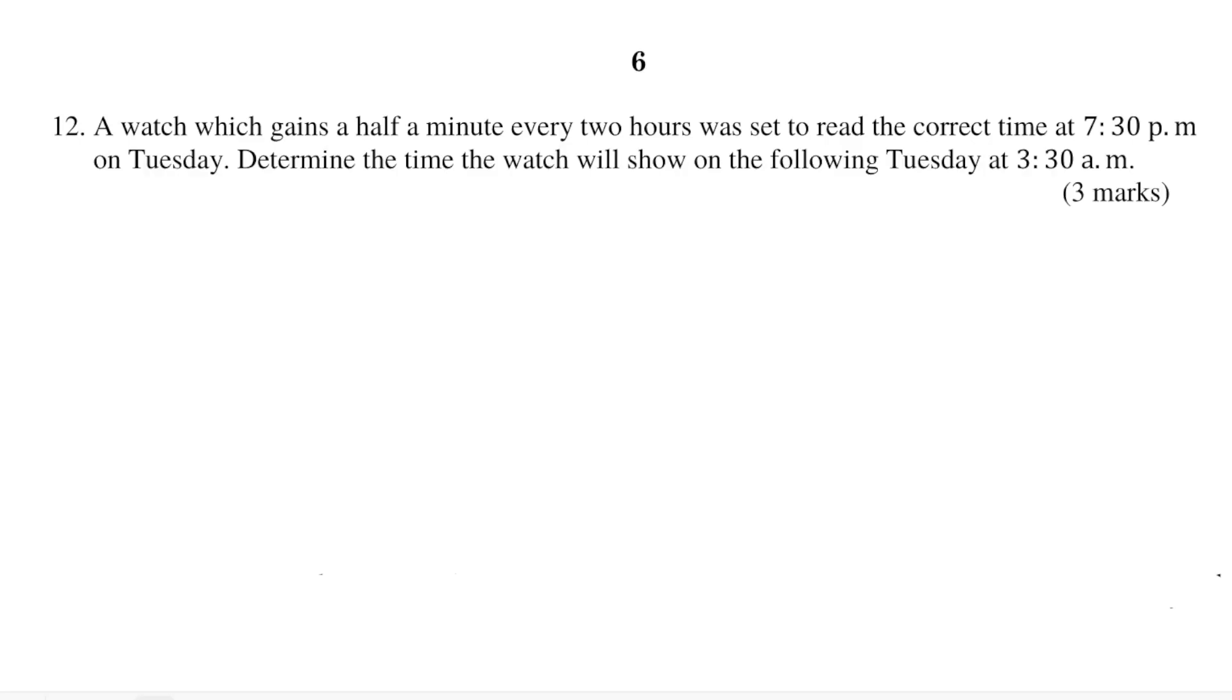A watch which gains half a minute every two hours was set to read the correct time at 7:30 PM on Tuesday. Determine the time the watch will show on the following Tuesday at 3:30 AM.